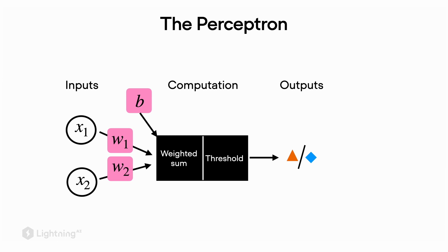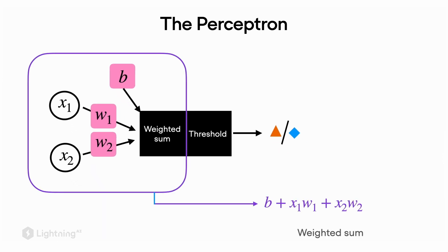Now that we introduced the basic concepts and usage of tensors, let's see how we can use concepts from linear algebra to encode certain things like the weighted sum more efficiently. Remember the weighted sum here is computed by multiplying the inputs with the weights and then adding the bias unit.